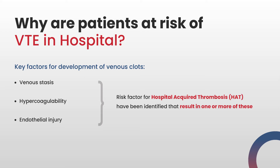We understand why patients admitted to hospital are more at risk of developing a clot. The work of Virchow in 1856 identified three broad categories involved in clot development: venous stasis, hypercoagulability, and endothelial injury. Venous stasis is when blood flows more slowly; hypercoagulability is when blood clots more easily; and endothelial injury occurs when there is damage to the lining of the blood vessel. When somebody comes into hospital, they may be exposed to one, two, or all three of these factors.